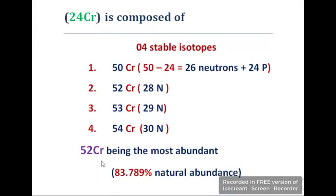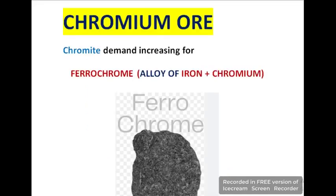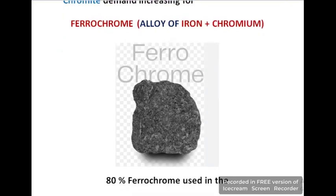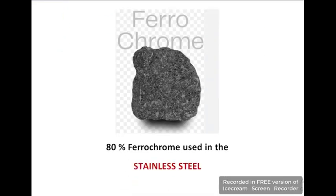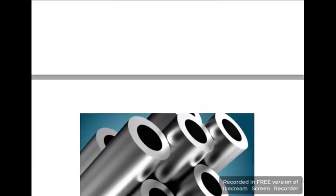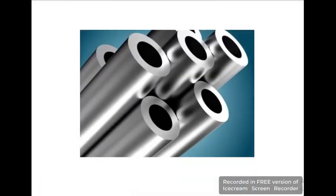The most abundant isotope is Cr-52, with an abundance of 83.2279 percent. The main source of chromium metal is chromite, which is an ore of chromium. Chromite is used to produce ferrochrome, which is an alloy of iron and chromium. 80 percent of ferrochrome is used to produce stainless steel, which is used for different applications.